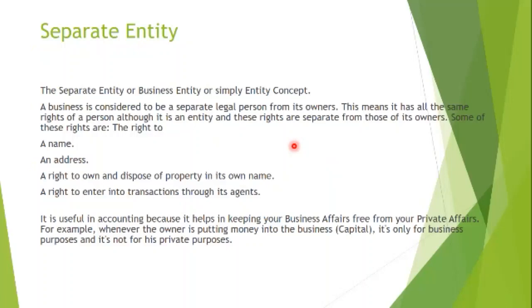The first concept we need to understand is called the separate entity concept, the business entity concept, or simply the entity concept. A business is considered to be a separate legal person from its owners. Notice the word 'person' — it is considered to be a separate legal person because it is not actually a person but more of an entity. This means it has all the same rights as a person, and these rights are separate from those of the owners.